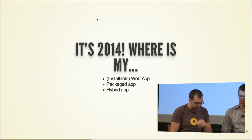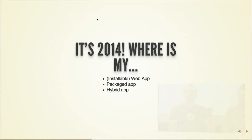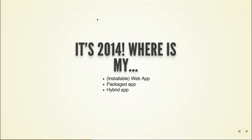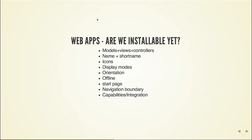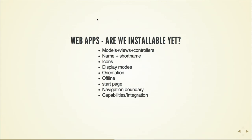So it's 2014. Where are my apps? Why can't I install yet? The problem of installation is interesting because it's not just about whether we can add apps to the home screen. There's also the packaged apps movement and hybrid apps. So let's start with web apps very quickly — are we installable yet? Do we have the right bits that we actually need? I'm treating model-view-controller as HTML, CSS, and JavaScript as the embodiment of these concepts.